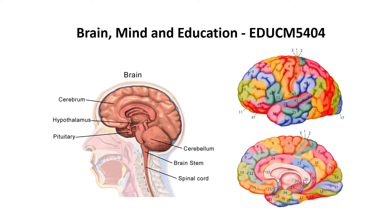This is important because as somebody who's going to become an expert in neuroscience and education, you need to be able to find your way around the brain, you need to know what different parts are called, you need to know navigation signposts like dorsal, ventral, lateral — what these things actually mean in terms of which part of the brain we're talking about and also what we think that part of the brain does.